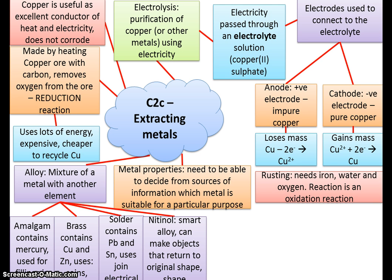The first one we have is amalgam. Amalgam uses mercury and is used for tooth fillings. It used to be that mercury was used quite a lot in fillings, until scientists realised how toxic it is. In some instances now, if someone has been buried with a lot of fillings, they'll take the fillings out if they're made with mercury because scientists are worried about the mercury leaching into the ground and causing pollution.